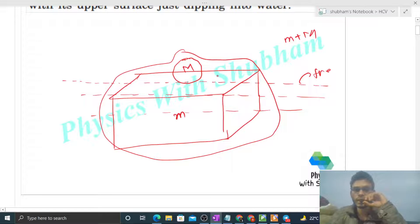It means the weight of this system, that is small mg plus capital Mg, is balanced from the buoyancy force. And how do we find out the buoyancy force? How much volume is submerged of this system in water?